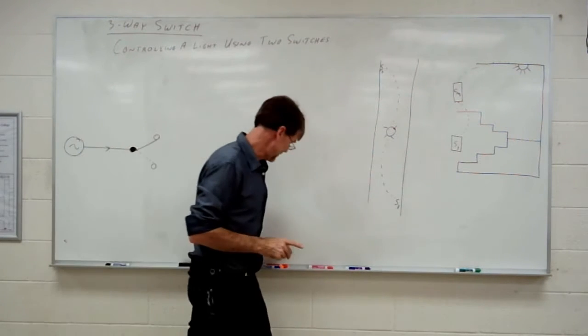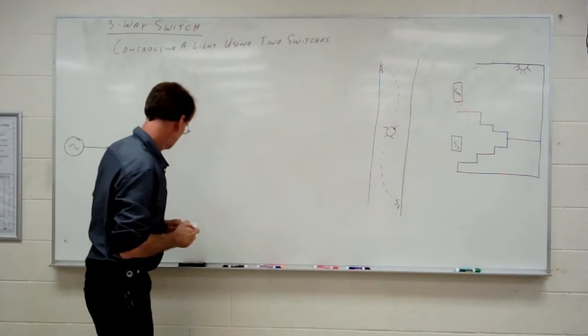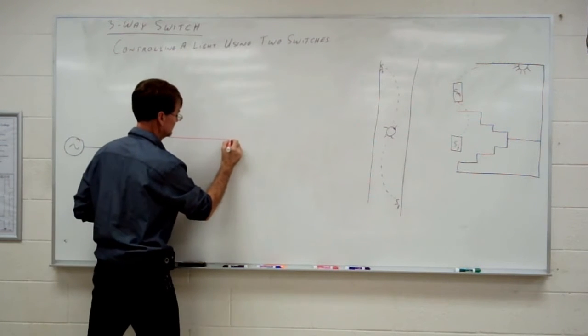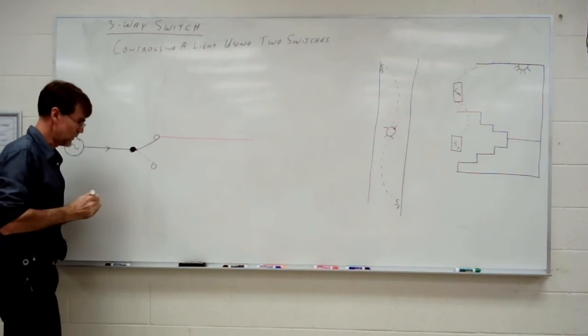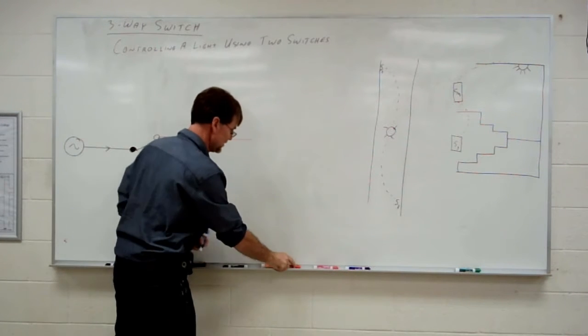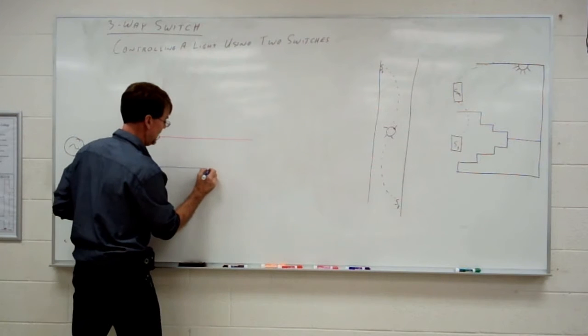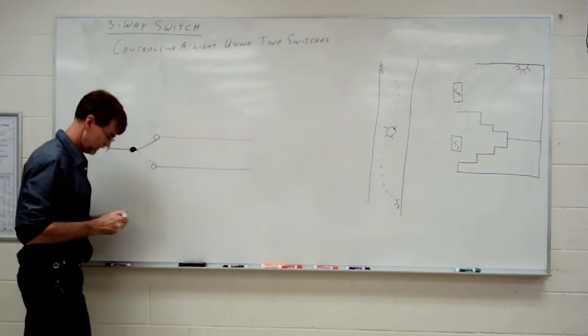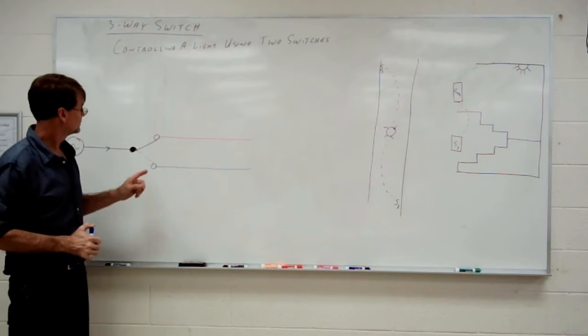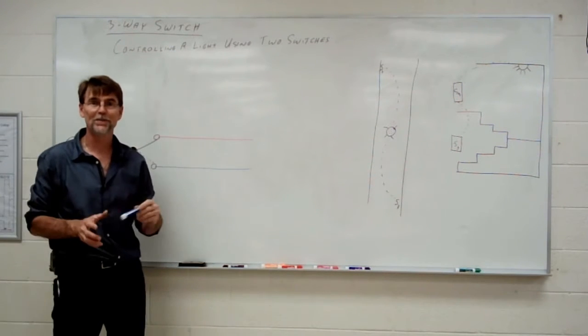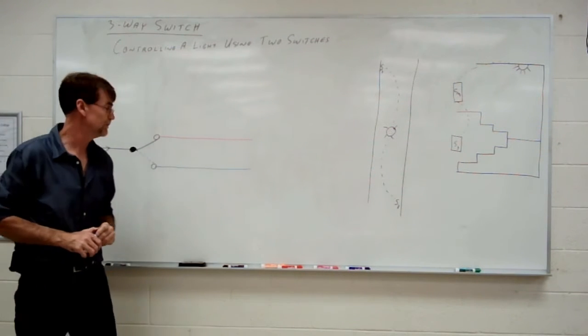We're going to have two wires connected here though. So we're going to have a wire connected here. And it's going to go somewhere and I'll choose a different color. We're going to have a wire connected here and then it's going to go somewhere. Now, I told you that three-way switches come in pairs, so here's where the second one comes in.